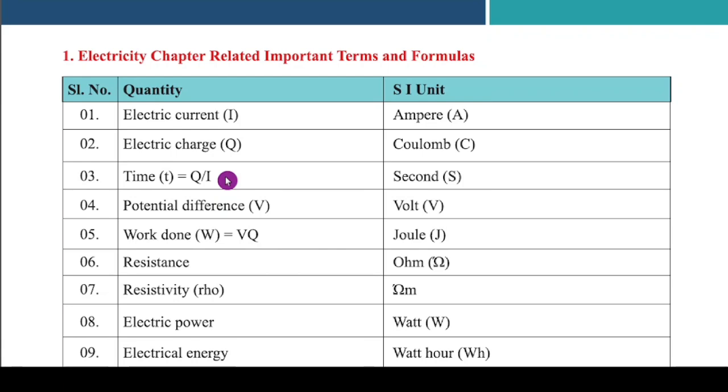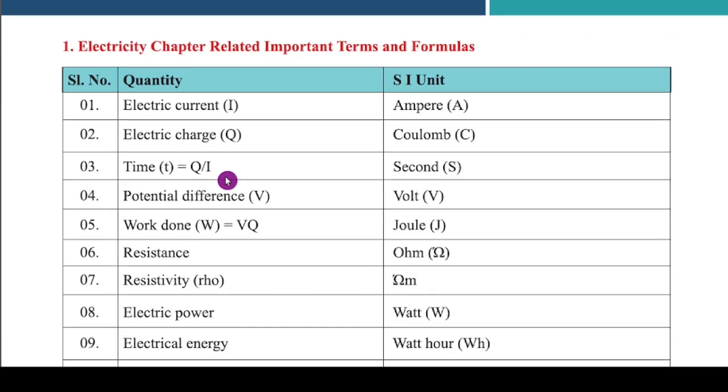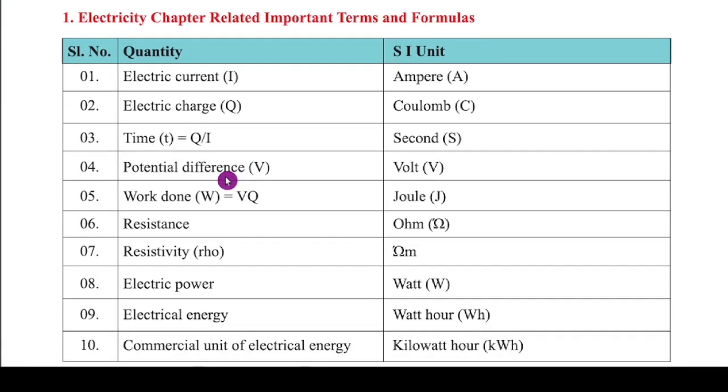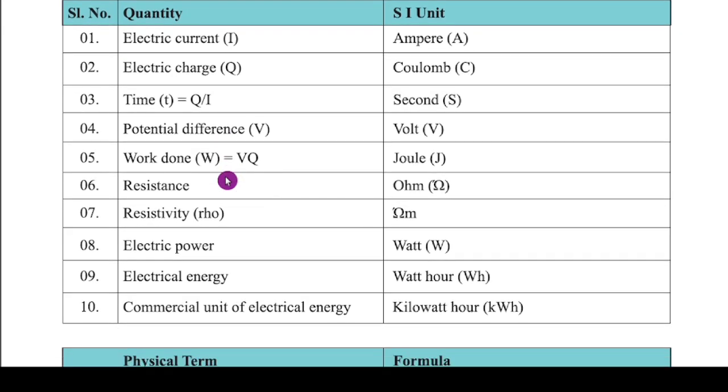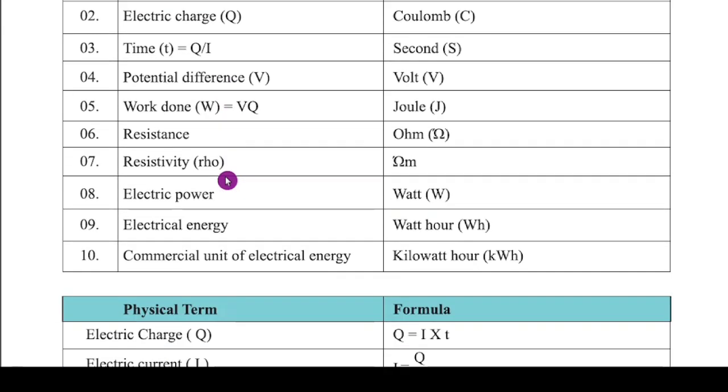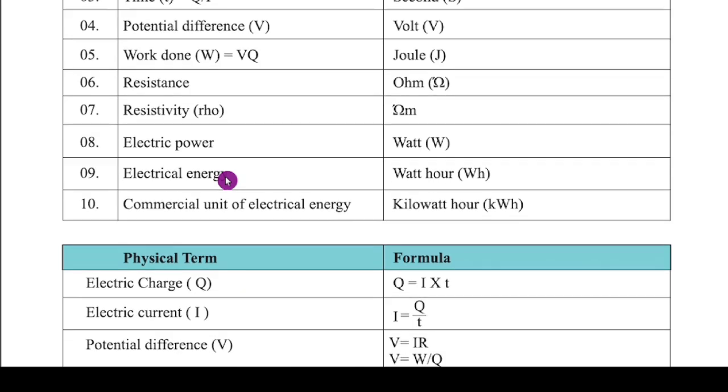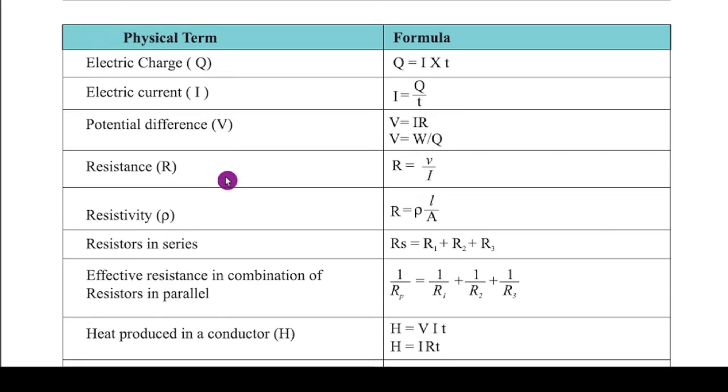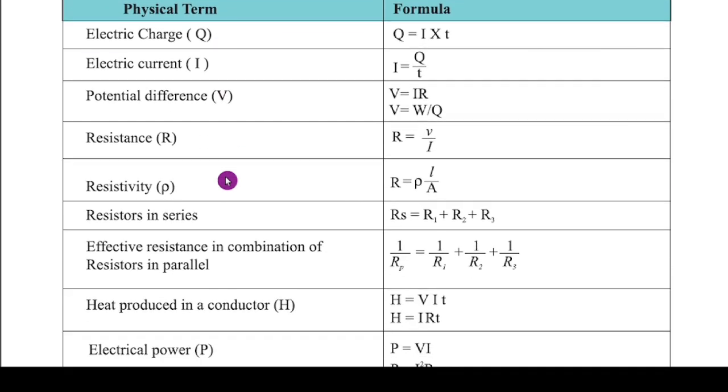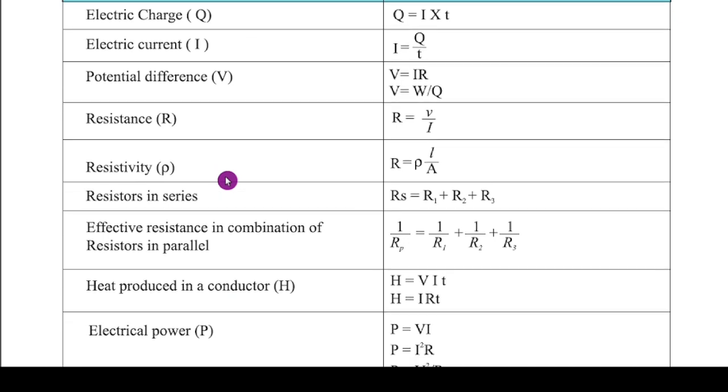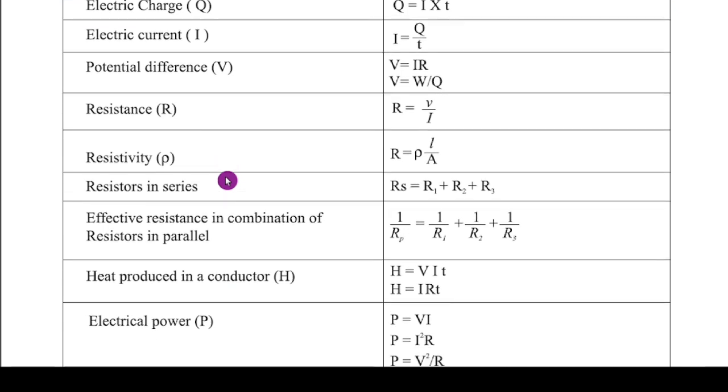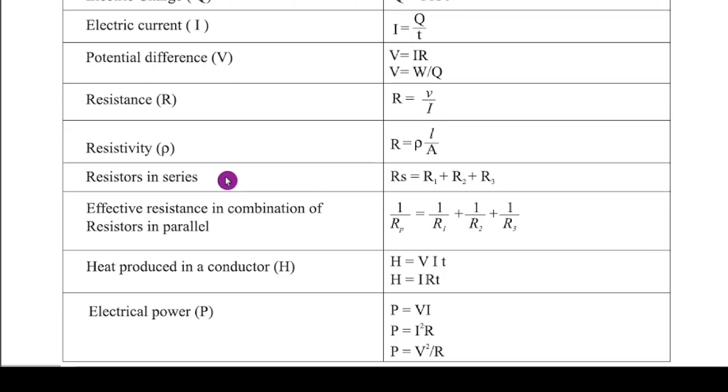And the next one is important terms and formulas. So electric current, the SI unit is ampere, electric charge, coulomb. See all the terms and SI units I have given. So don't forget. And formulas, these formulas are very important because you have to solve the problems. So when you are going to solve the problem, these formulas you have to remember. By learning this, you will get four marks from the problems. So remember all the problems and do it.